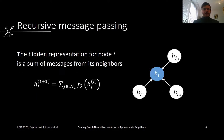More specifically, in message-passing GNNs, to compute the hidden representation for a given node, we need to aggregate information from its neighbors at every layer. The neighbors, in turn, have to aggregate messages from their own neighbors and so on.